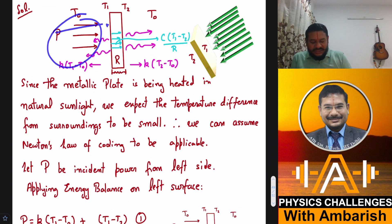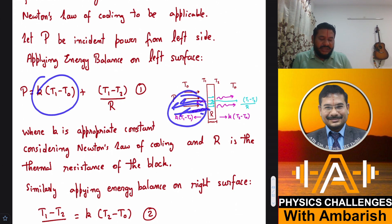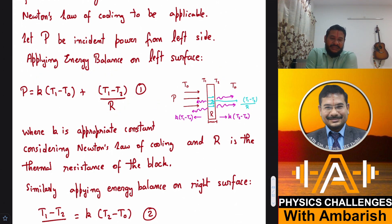Since the metallic plate is being heated in natural sunlight, we expect the temperature difference from surroundings to be small and we can assume Newton's law of cooling to be applicable. Let P be the incident power from the left side. The rate of heat loss is K times T1 minus T0 to the surroundings from this side. Plus whatever is being conducted, thermal resistance is R. So the heat going from left face to right face is T1 minus T2 by R.